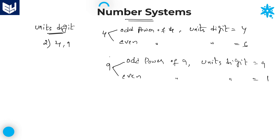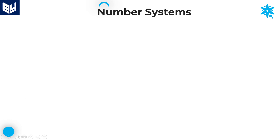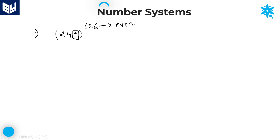These are the points explained in the previous session. Now in this session I will explain problems related to second category digits. First example: 249 whole to the power of 126. Here the number is ending with 9 and the power value is even. For even power of 9, the units place digit is equal to 1. If a number is ending with 9 and the power value is even, then the units digit is always 1.